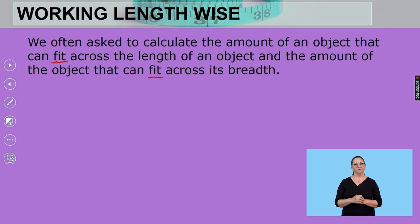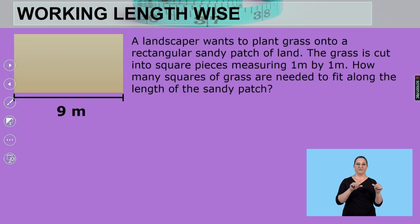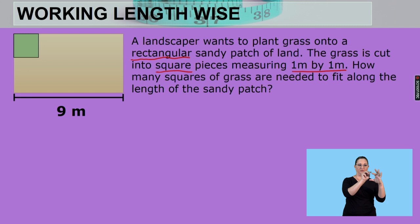A landscaper wants to plant grass onto a rectangular sandy patch of land. We've got to take note of the shapes that are given to us. The grass is cut into square pieces measuring one meter by one meter. How many squares of grass are needed to fit along the length of the sandy patch? So looking at this, there's one patch of land. Now, if it's going across the length, you agree it's going across this way. That's its length. That's the measurement of the length. It's going across all nine meters.